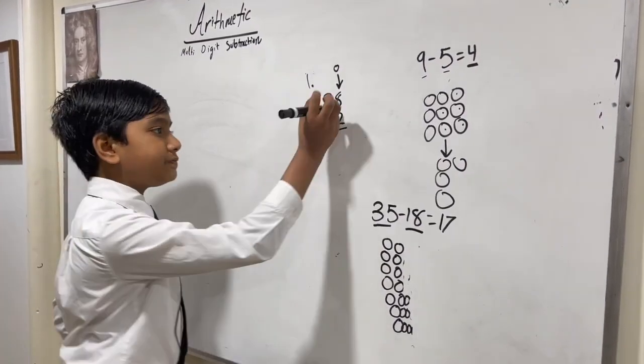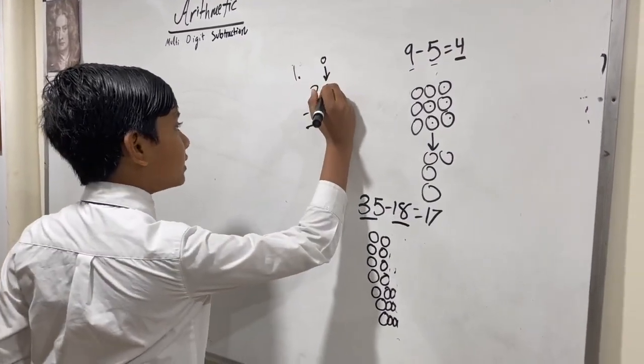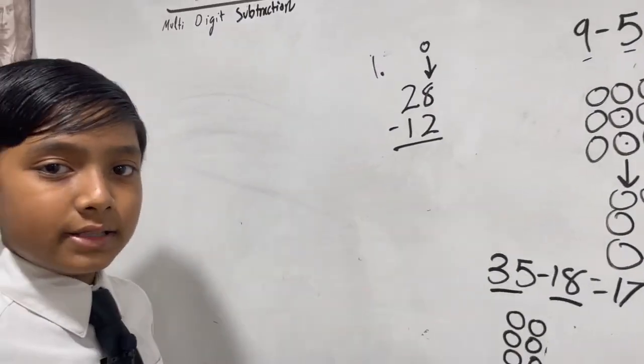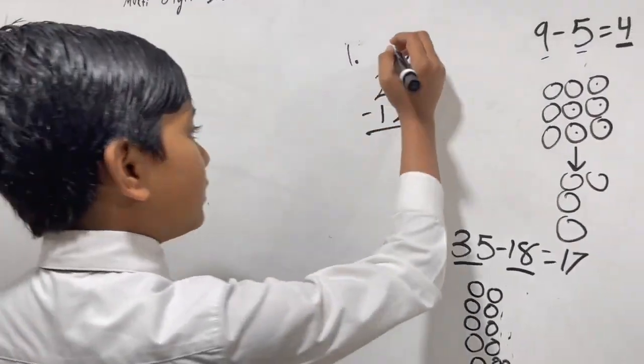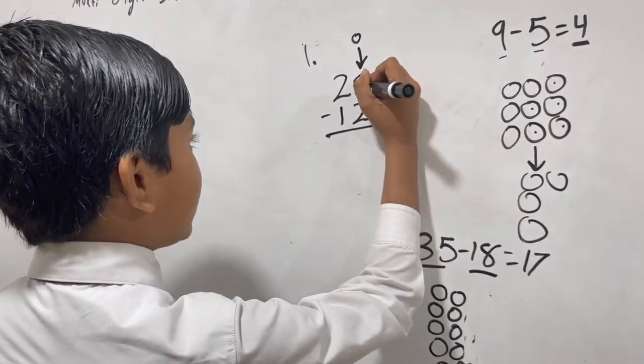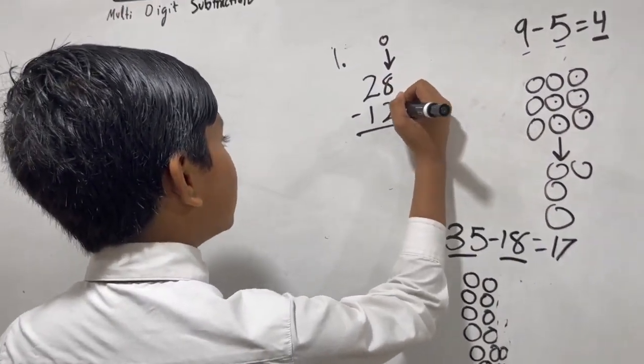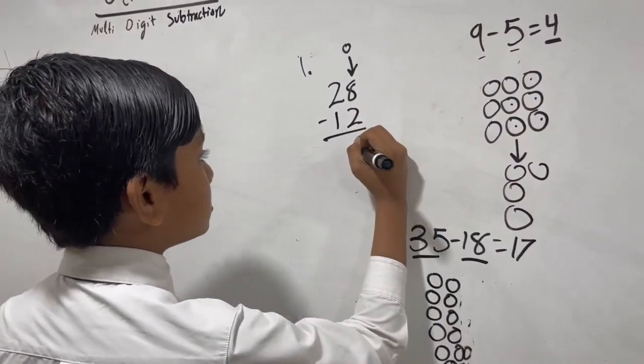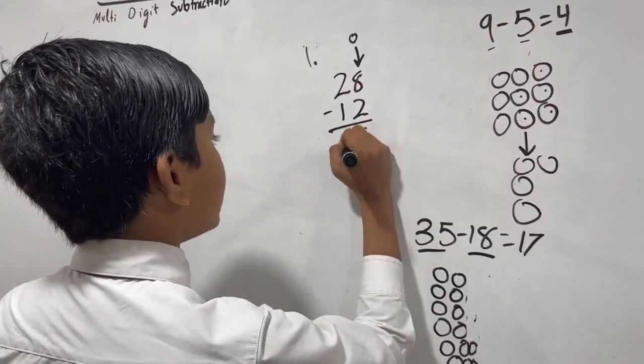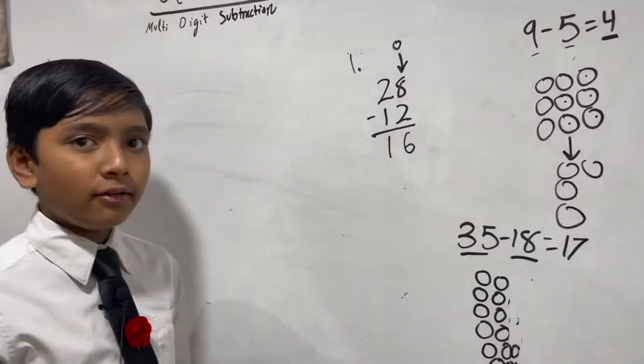Now all we need to do is the same thing as addition but using subtraction. So instead of 8 plus 2, we would do 8 minus 2 equals 6, 2 minus 1 is 1. 28 minus 12 is 16.